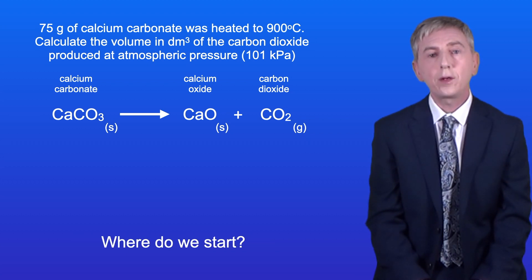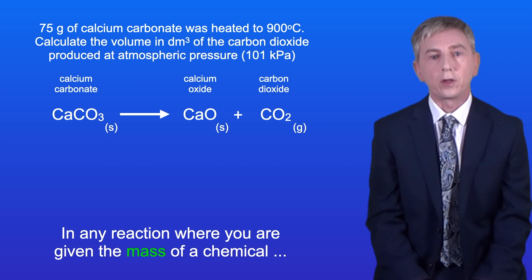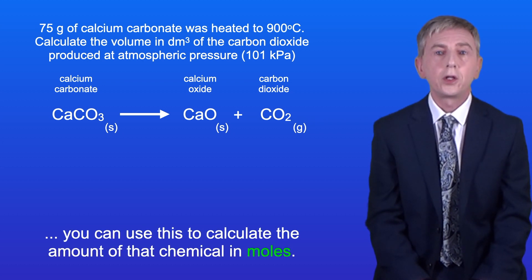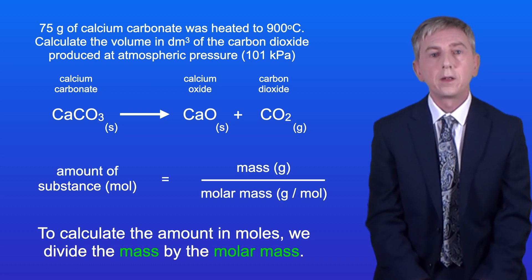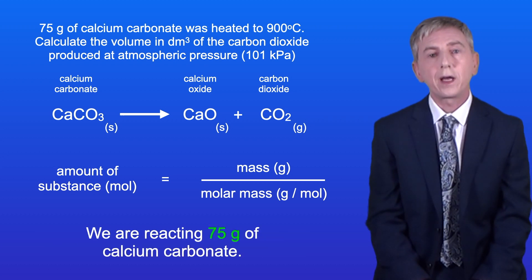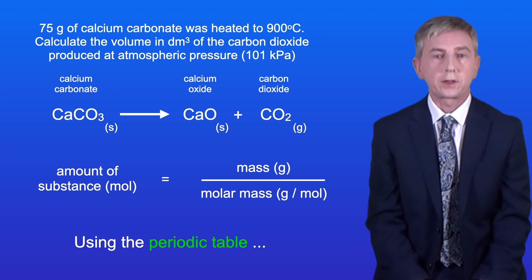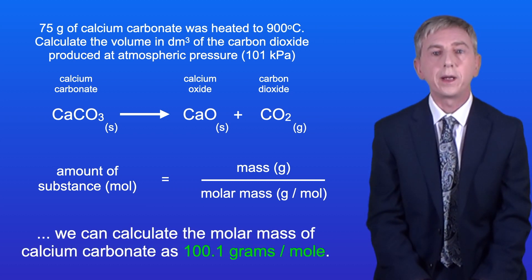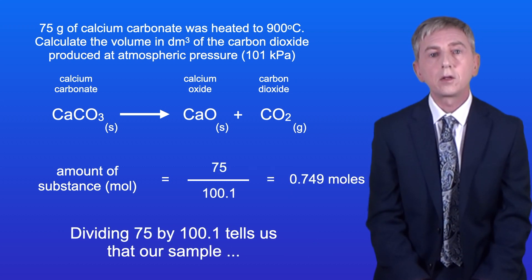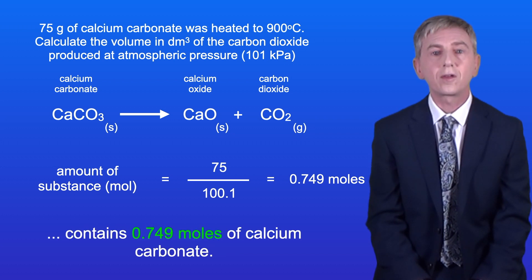In any reaction where you're given the mass of a chemical, you can use this to calculate the amount of that chemical in moles. To calculate the amount in moles we divide the mass by the molar mass. We're reacting 75 grams of calcium carbonate. Using the periodic table we can calculate the molar mass of calcium carbonate as 100.1 grams per mole. Dividing 75 by 100.1 tells us that our sample contains 0.749 moles of calcium carbonate.